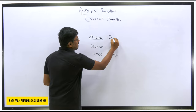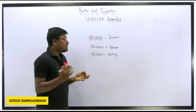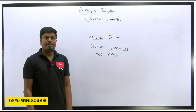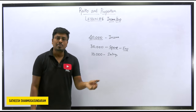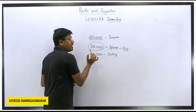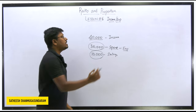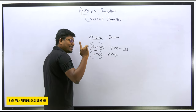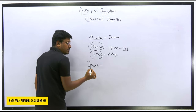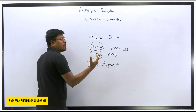So 40,000 is my income. From that, I have spent 30,000. This spending amount is also called expenditure — for example, 20,000 for rent, 2,000 for transport, 3,000 for electricity, 5,000 for food, etc. The remaining amount is savings. The key formula to always keep in mind is: income equals expenditure plus savings.